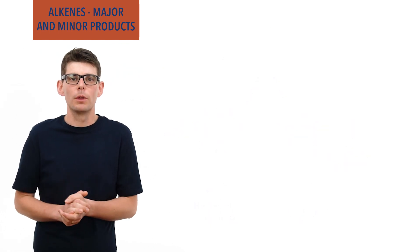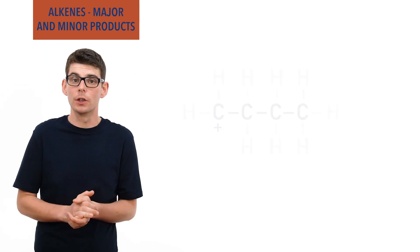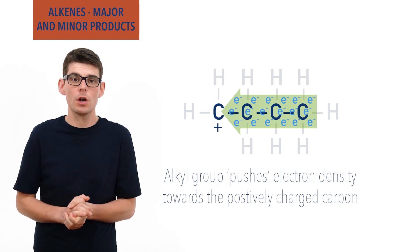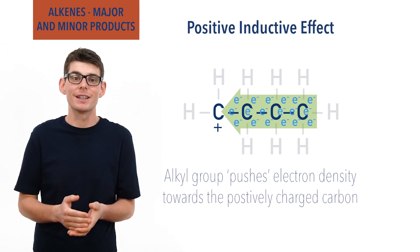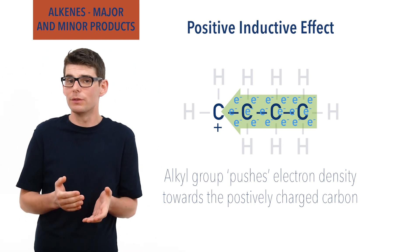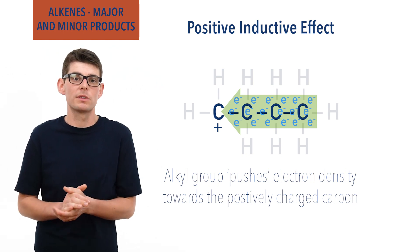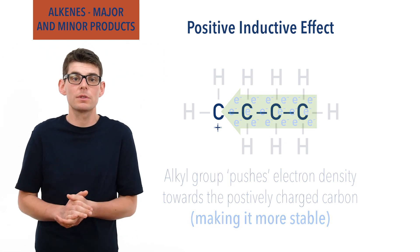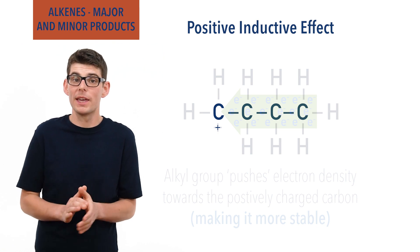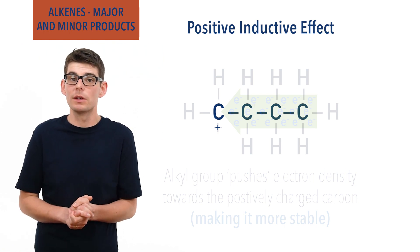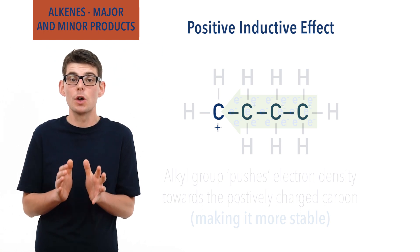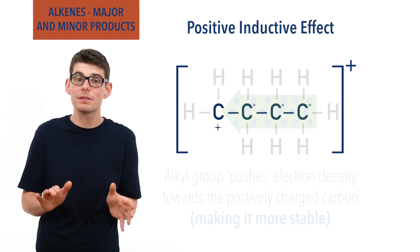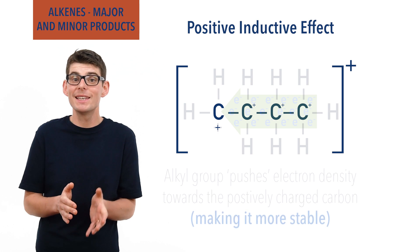Any carbon groups bonded to the positively charged carbon in a carbocation are able to push electron density towards the positive charge. This is called a positive inductive effect. As electrons are negatively charged, electrons moving closer to the positive charge effectively stabilize it and make it slightly less positive. The carbons pushing electrons away will themselves become ever so slightly positive, and the whole carbocation still has an overall positive charge.